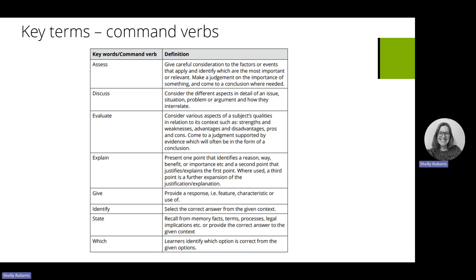The lead examiner report is a report created by the lead examiner. After each series of exams they write a report covering things that learners did well — areas of strength — but also areas where learners were weaker, referring to the whole exam cohort, not just your cohort. It gives you an opportunity to find out what went well and what didn't, so you can make sure your learners going forward know these points and don't stumble on the same errors. I'll show you where to find the lead examiner reports later.